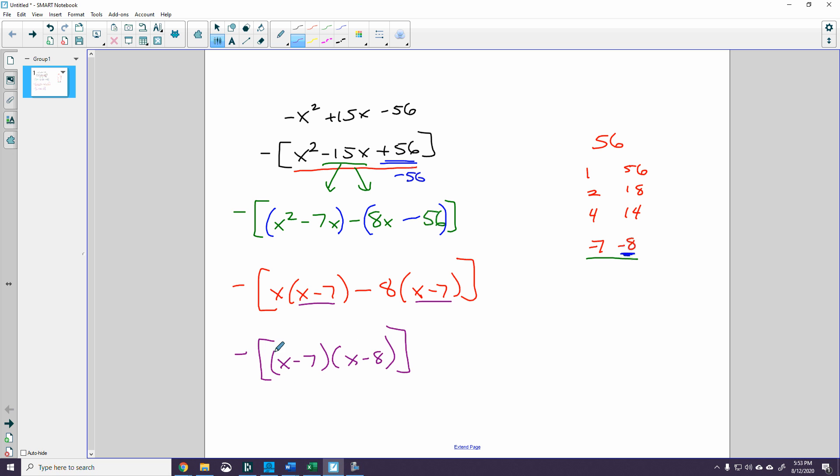Now I can just bring the negative. I can get rid of these brackets here, and I can just have negative x minus 7 times x minus 8.